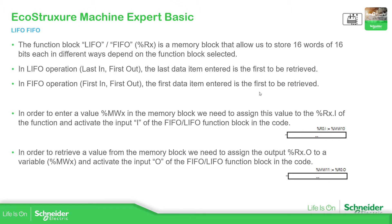In order to enter a value or a variable into the FIFO or LIFO function block, we need to associate the percentage r, number of the instance, dot i for input, to a percentage NW variable. And in order to retrieve a value, we need to use the percentage r, number of the instance, dot o for output, to a percentage NW variable — so we can retrieve the data from the FIFO or LIFO function block.